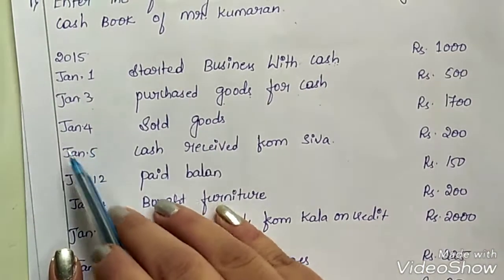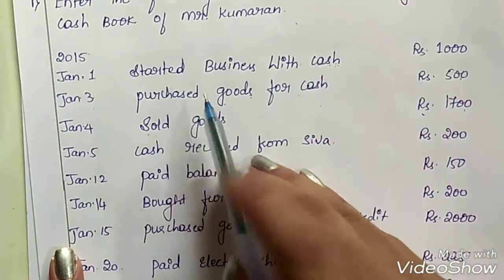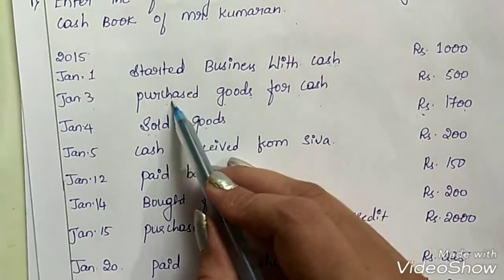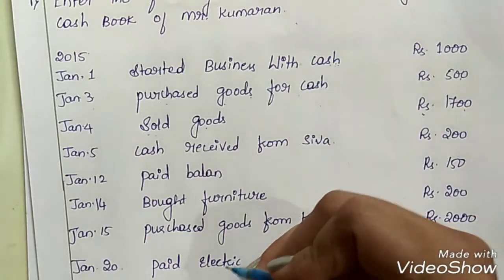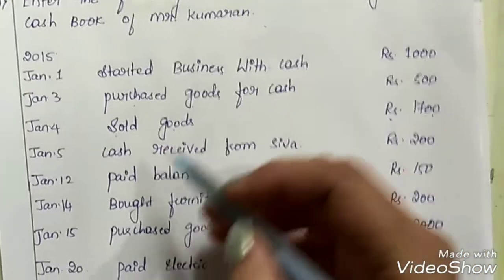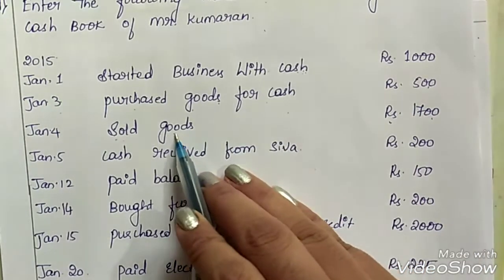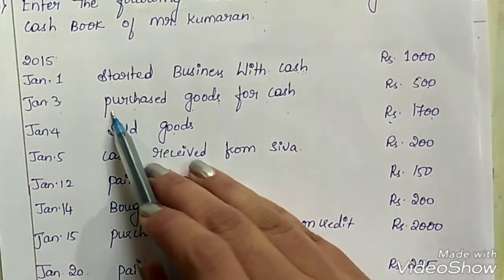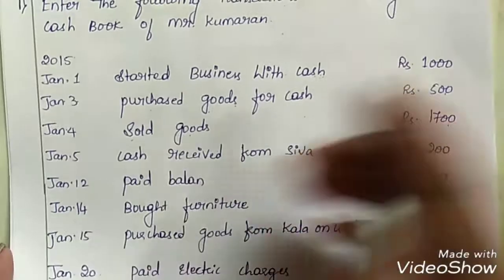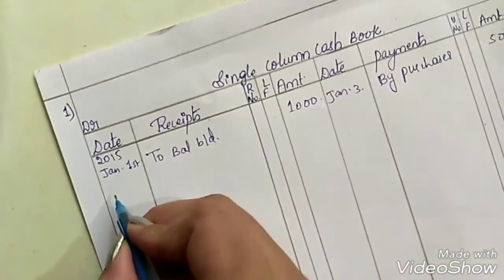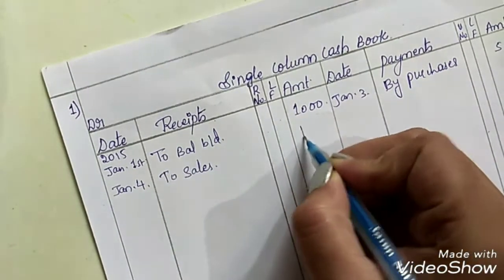Next transaction: on January 4th, sold goods Rs. 1700. This is the opposite of the previous entry. When we sell the goods, we receive cash in return. So cash is coming to us. It should be taken on the debit side, the receipts side. Entry: January 4th, to sales, Rs. 1700.